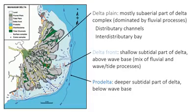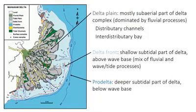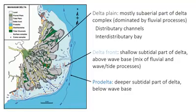The shallow marine part of the delta — shown here in the light blue color — which is above wave base, is called the delta front. The deeper part, shown in blue, down to 50 meters or so, is called the prodelta. It's below wave base — the more distal, deeper subtidal facies.